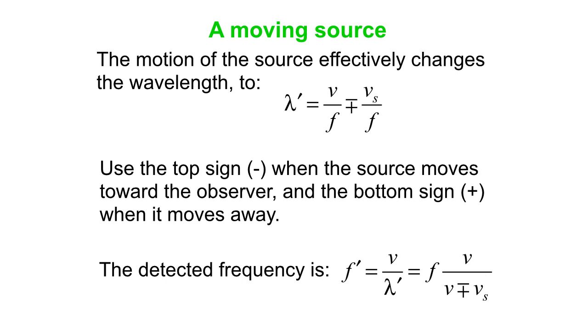Okay, so the detected frequency here is F prime is V over lambda prime, but lambda prime is V minus or plus Vs over F. So we can write that in the end as the observed frequency F prime is F, the original frequency, times this factor, V over V minus or plus Vs.